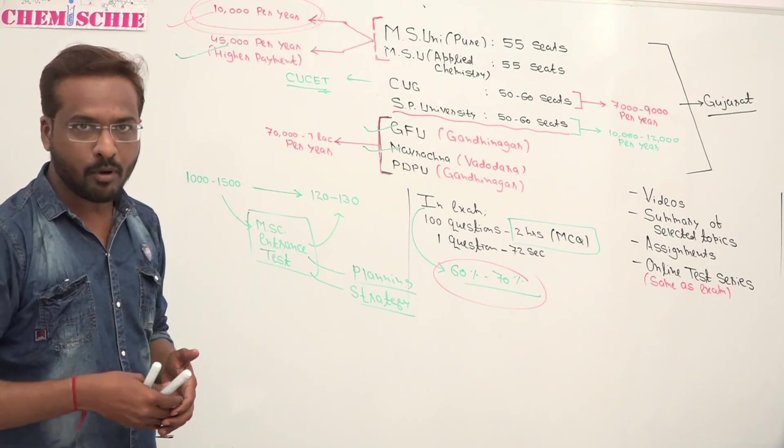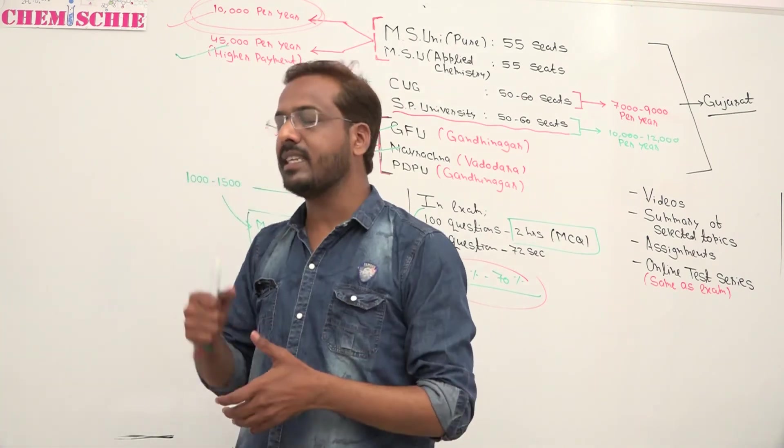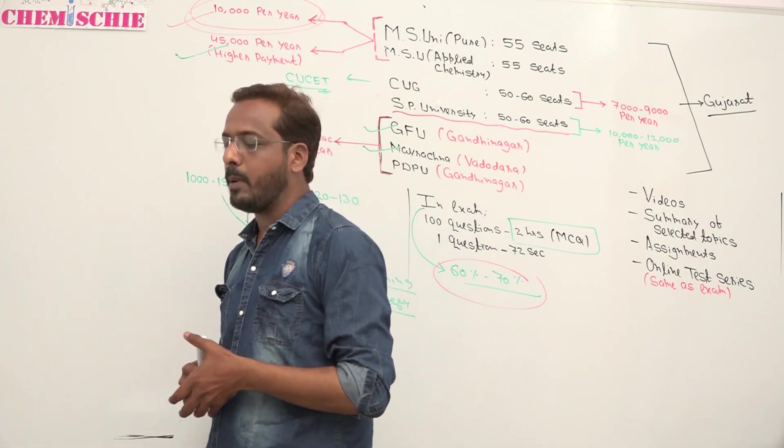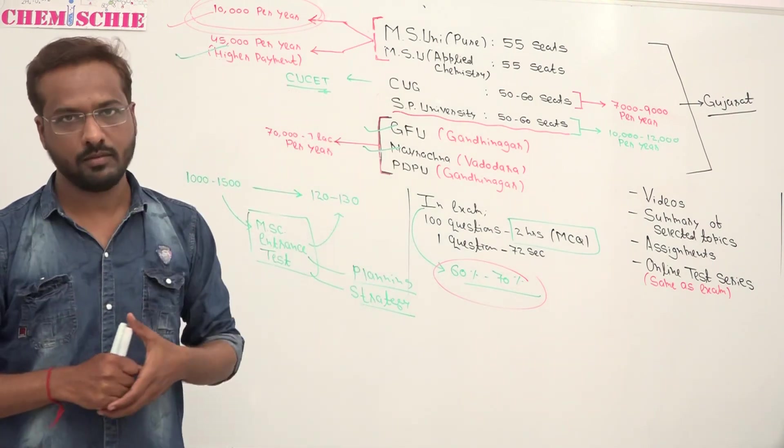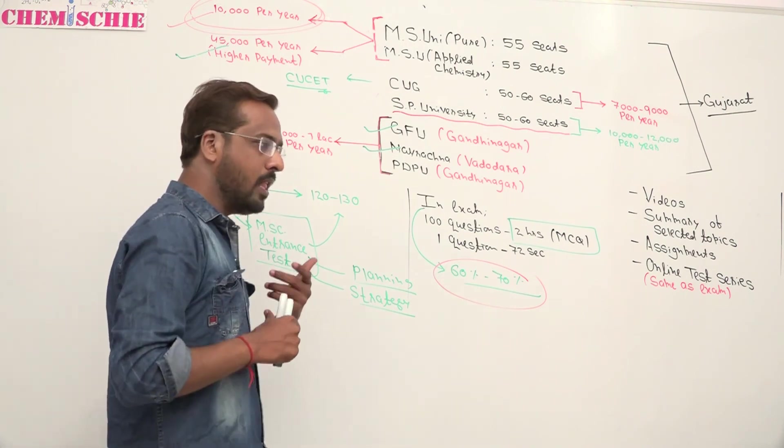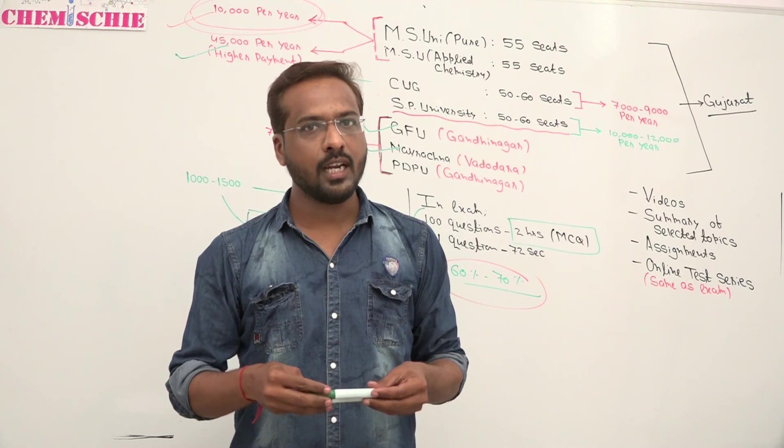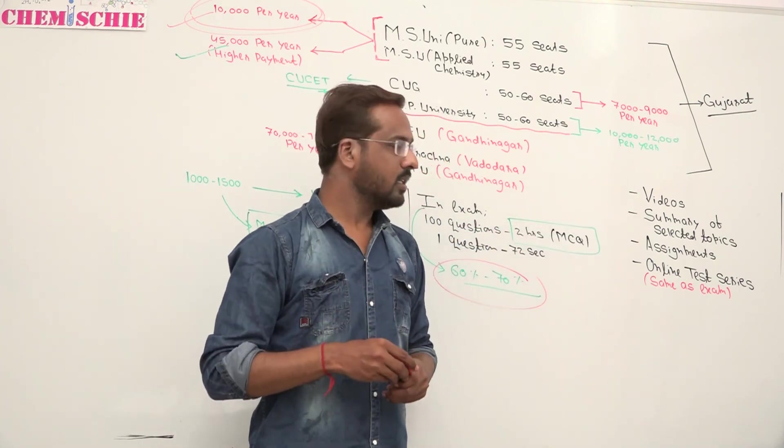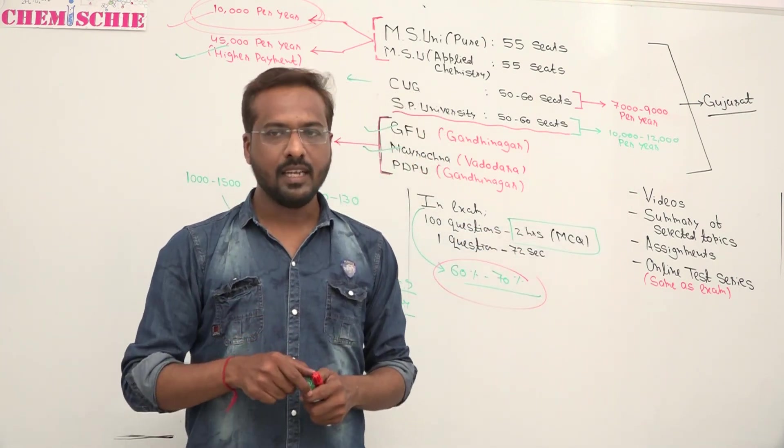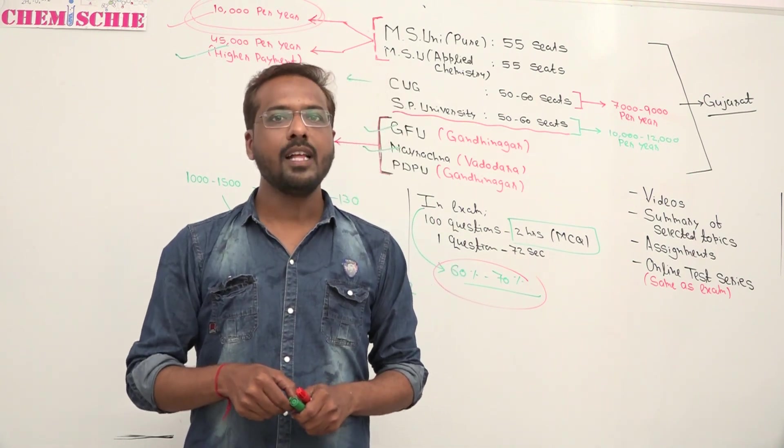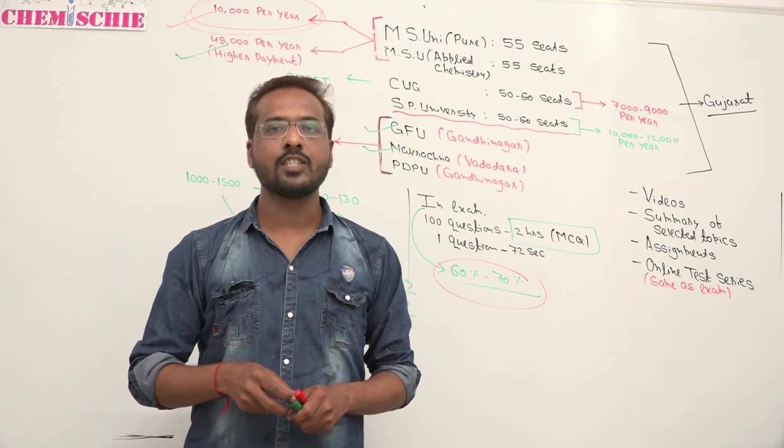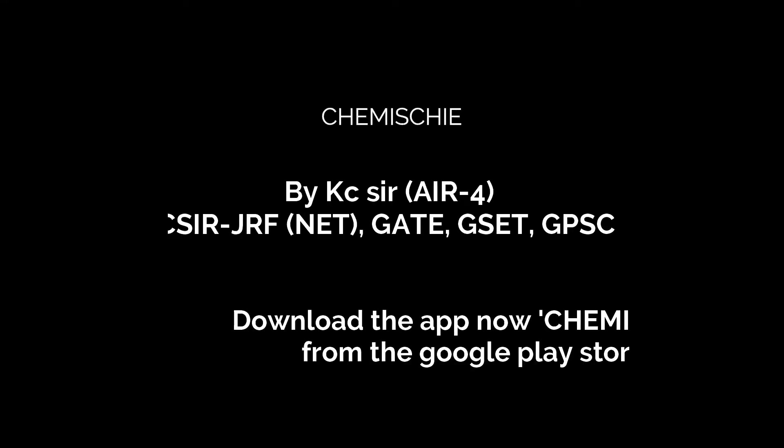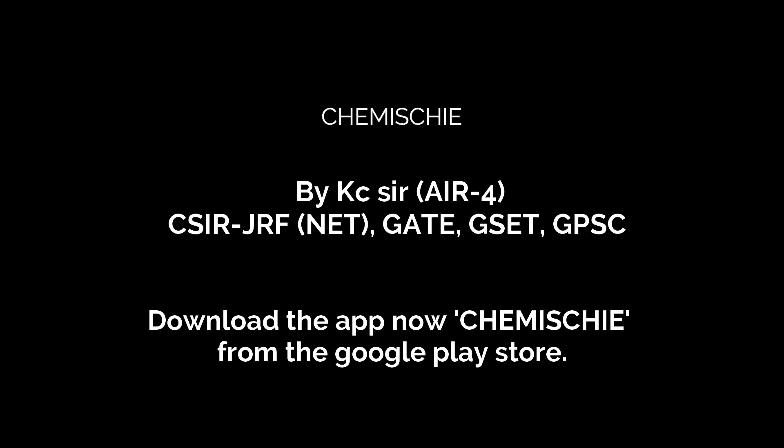See the difference: if you have government quota, fees is 10,000 per year. If you don't, you go to higher fees, 40,000 per year. So fees is very high. Here we launch our online course where we provide videos, summaries of topics, assignments, and online test series. So you can attend the questions very fast and very easily. Happy learning. We will see you next time. Thank you.